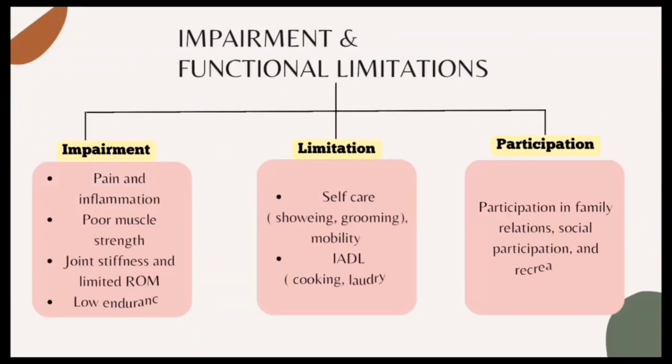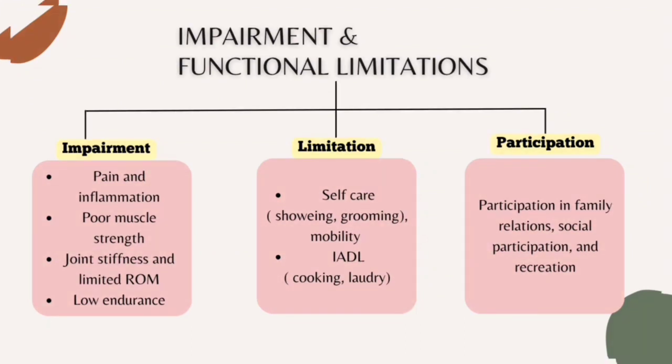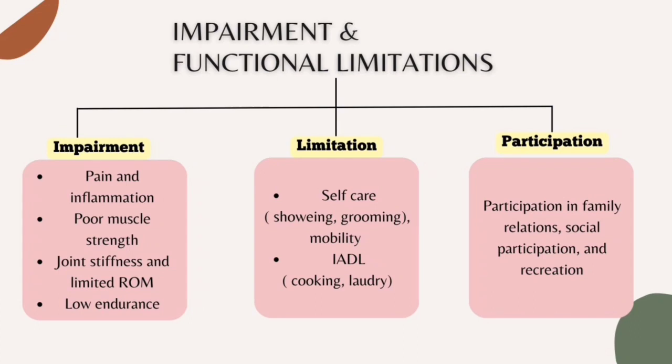As for impairment and functional limitations, patients with osteoarthritis usually have pain and deformity, poor muscle strength, joint stiffness, limitation of range of motion and low endurance. They commonly have limitations with self-care activities like showering and grooming, mobility, and instrumental activities of daily living such as cooking and laundry, as well as problems with leisure activities. They also have a hard time with participation in family rehabilitation, social participation and recreation.